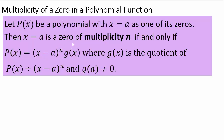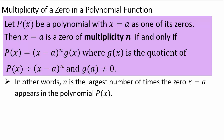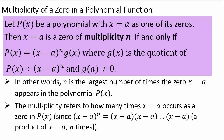This brings us to another vocabulary term: multiplicity of a zero. We say x equals a is a zero of multiplicity n if (x minus a) is a factor exactly n times. In other words, we write p(x) as (x minus a)^n times g(x), where g(a) is not zero. So n is the largest number of times x equals a appears as a zero in the polynomial p(x).